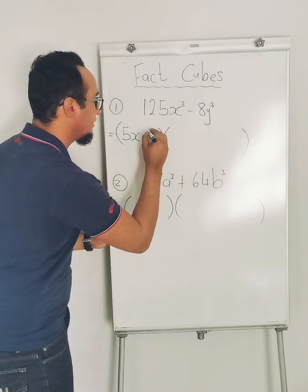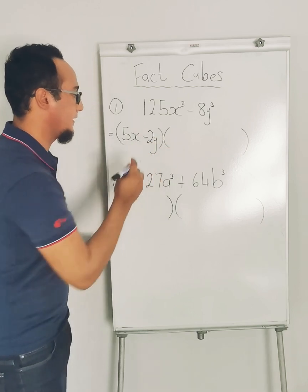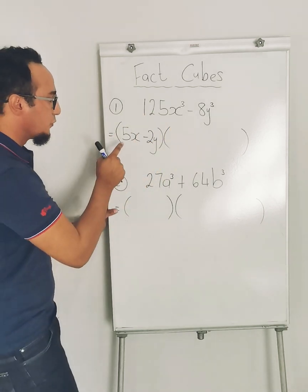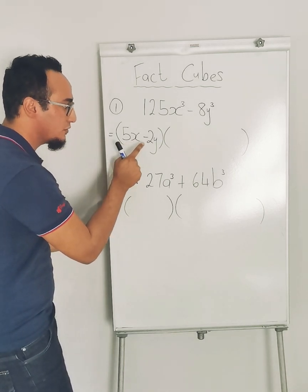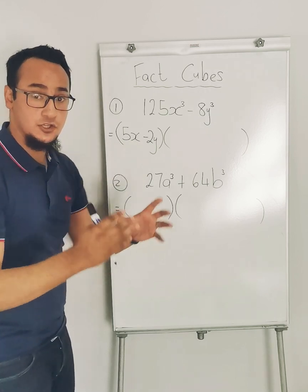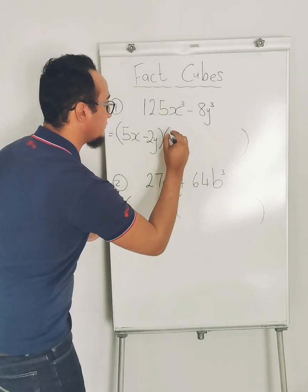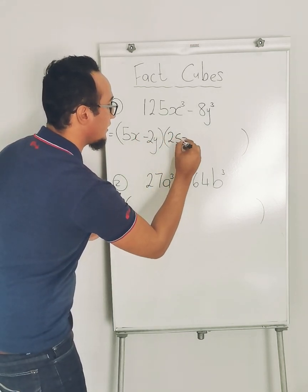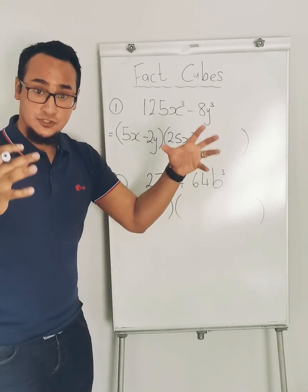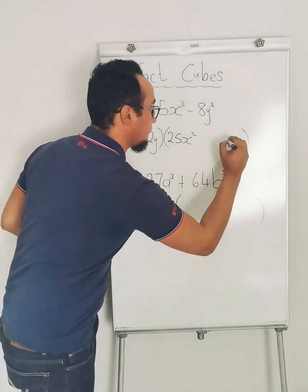Now what goes into the big bracket? We're going to square this and we're going to square that over there. So 5x squared is equal to 25x². The next one, 2y squared equals to 4y².